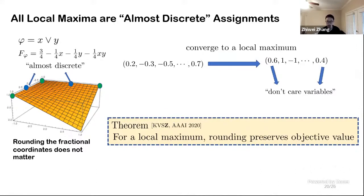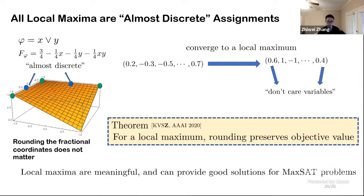This somehow gives us some guarantees about the solution quality of local maximum, because rounding does not harm, which is different from the case in LP, both LP and the SDP relaxation, where rounding can cause loss to the objective. In other words, local maxima are meaningful, and they do provide good quality solutions for some more relaxed problem, like max SAT.